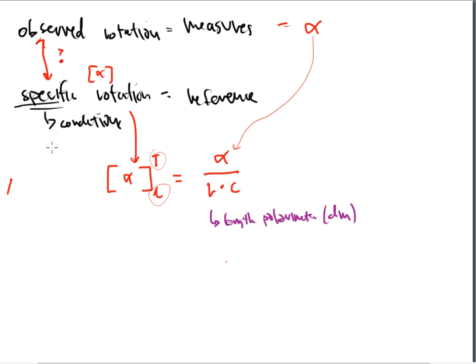L is the length of the polarimeter tube, given in terms of decimeters. Typically specific rotation is in terms of one-decimeter tubes, but not everyone uses a one-decimeter tube — we don't. We use a half of a decimeter, so 0.5 is the number we would always plug into L. They know that if we use half a decimeter, we'll get half the readout we should typically get. So we plug in our tube length, and this allows us to get closer to the specific rotation, which is the standard measurement everyone goes by.